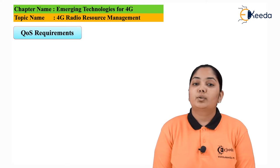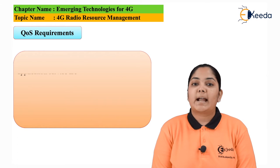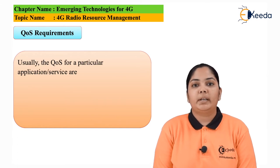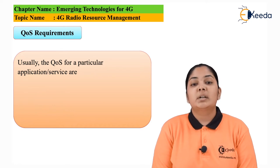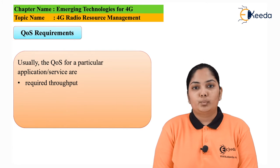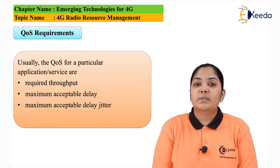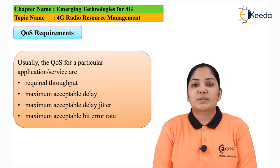In order to satisfy the quality of service for the user transmitting data — that is, to satisfy the end-user quality of the transmission from transmitter to receiver — certain quality of service parameters must be satisfied. These are: required throughput, maximum acceptable delay, maximum acceptable delay jitter, and maximum acceptable bit error rate.